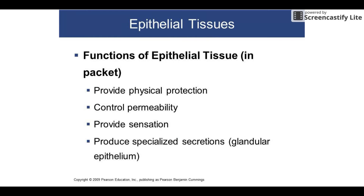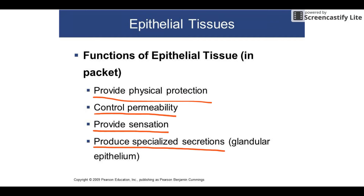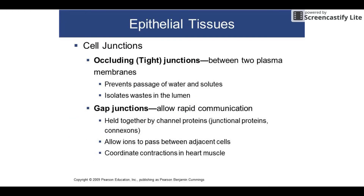Epithelial tissues have lots of different functions. We're going to learn about ten different types. In general, they provide protection depending on how thick they are — some are very protective, some aren't at all. They control permeability — some have almost zero permeability while others are the most permeable tissue in the body. They usually have lots of nerves for sensation and can produce many secretions, as glands are mostly made of epithelial tissue.